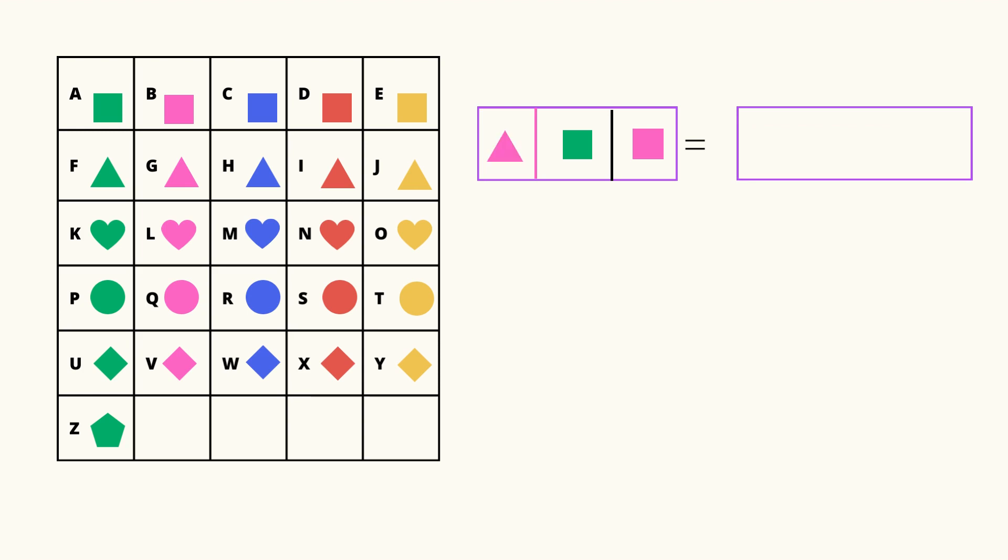A pink triangle is G, green square is A, pink square is B. G-A-B, gab. Next.